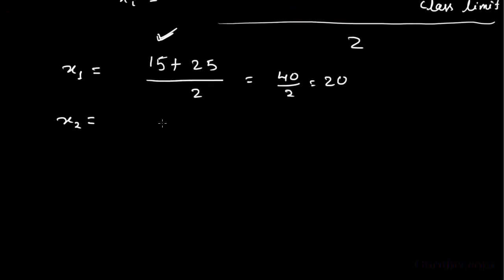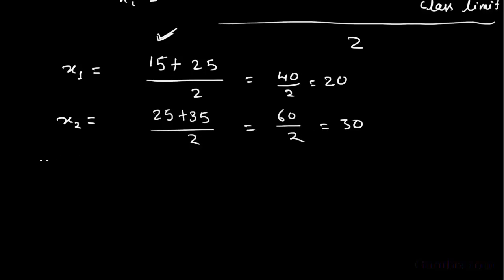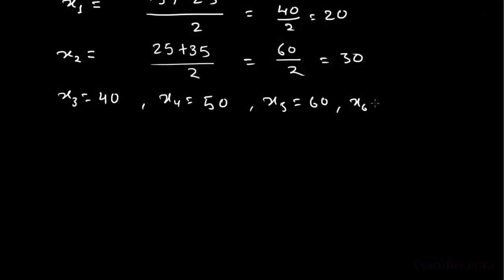x2 is 25 plus 35 upon 2, equal to 60 upon 2, equal to 30. Similarly, we can calculate x3, x4, x5. x6 is 70 and x7 is 80.